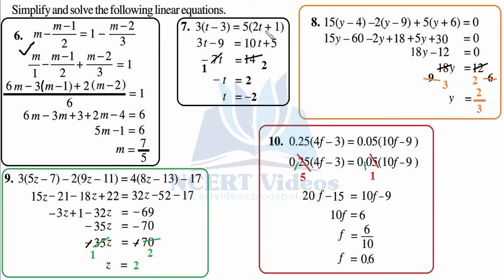We have a cancelling opportunity: 1 times 7 is 7, 2 times 7 is 14. We are left with minus t on the left-hand side equals 2 on the right-hand side. Now let's multiply this equation on both sides with minus. So minus times minus becomes plus t, and plus times minus gives us minus 2. We perform this step because our aim is to leave the variable with a positive sign. So t equals minus 2 is the answer. In this way our question number 7 is completed.